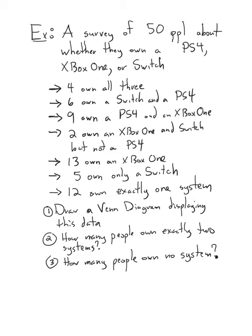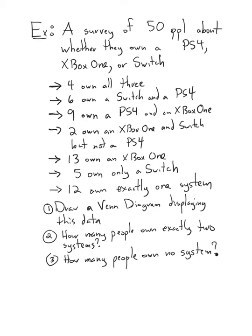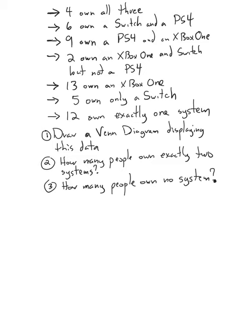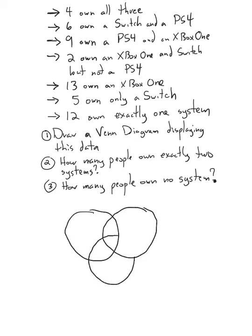So it's a good idea to draw a little Venn diagram to put this information in. Remember, there are 50 people — that's going to be important to us. Here is my Venn diagram with my three sets. Let's call P your PlayStation 4, X your Xbox One, and S your Nintendo Switch.